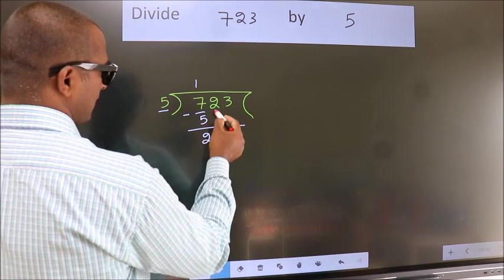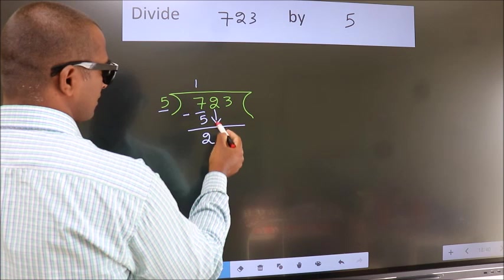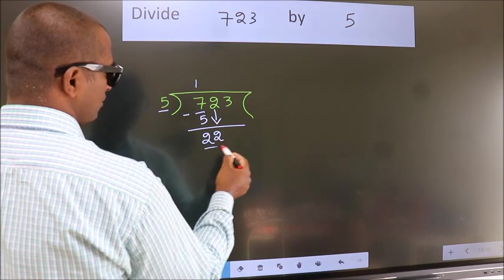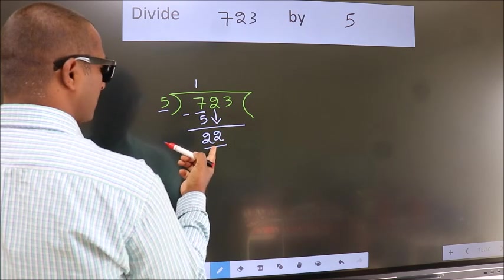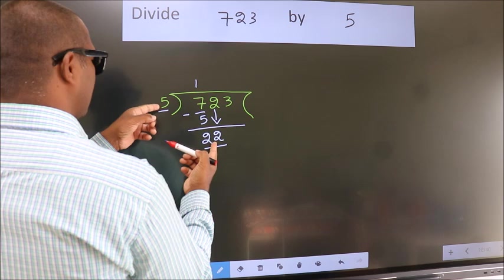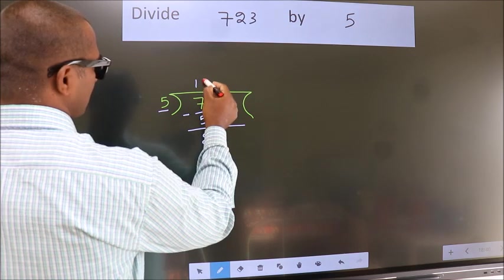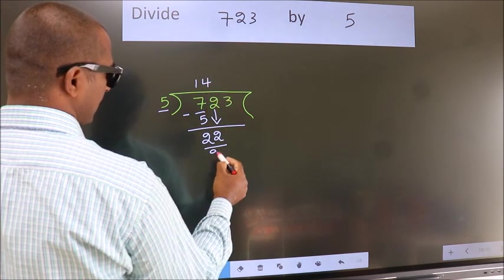After this, bring down the beside number. So 2 down, so 22. A number close to 22 in the 5 table is 5 fours 20.